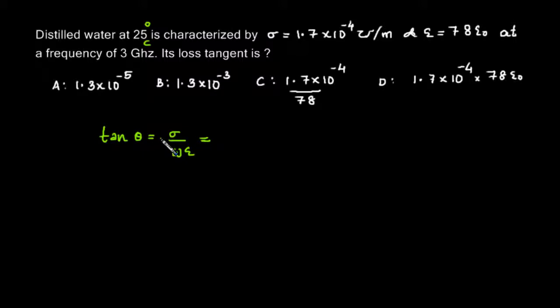Please make sure that you go through what is loss tangent and what are the interpretations we can get from loss tangent. So tan theta is sigma by omega epsilon. We just need to substitute the values given and find out what is the loss tangent. That is sigma is 1.7 into 10 power minus 4.